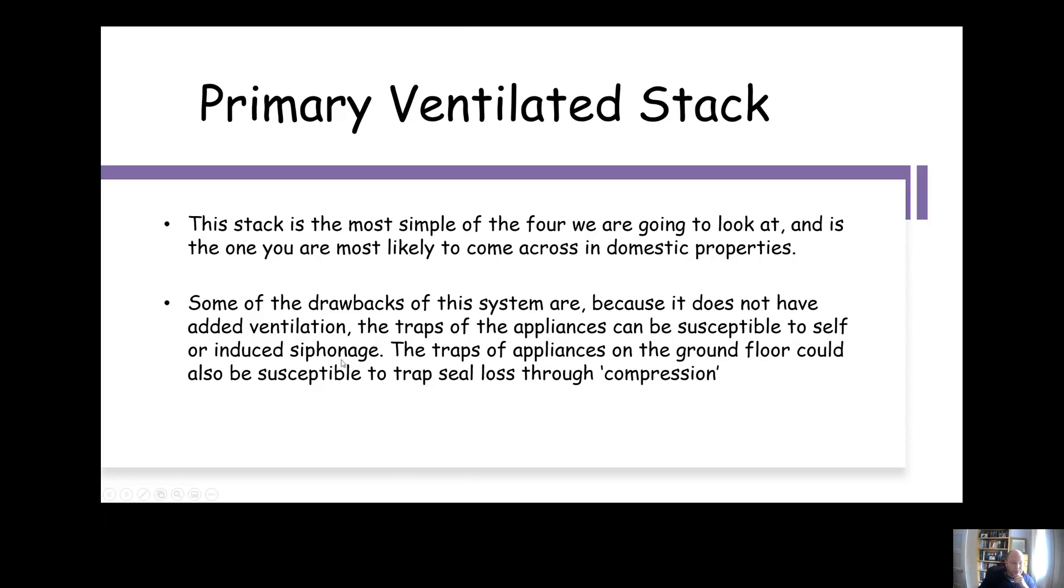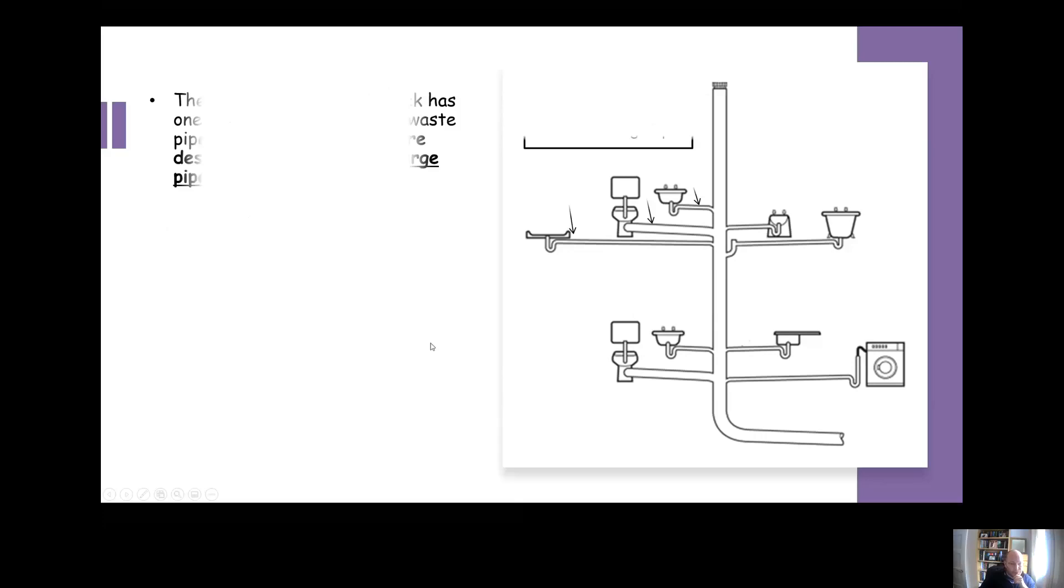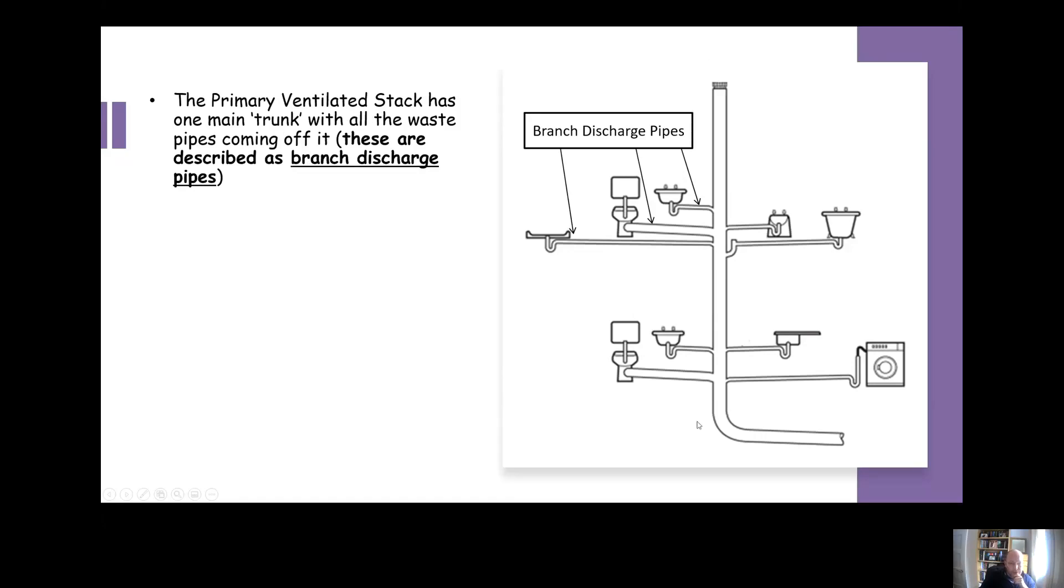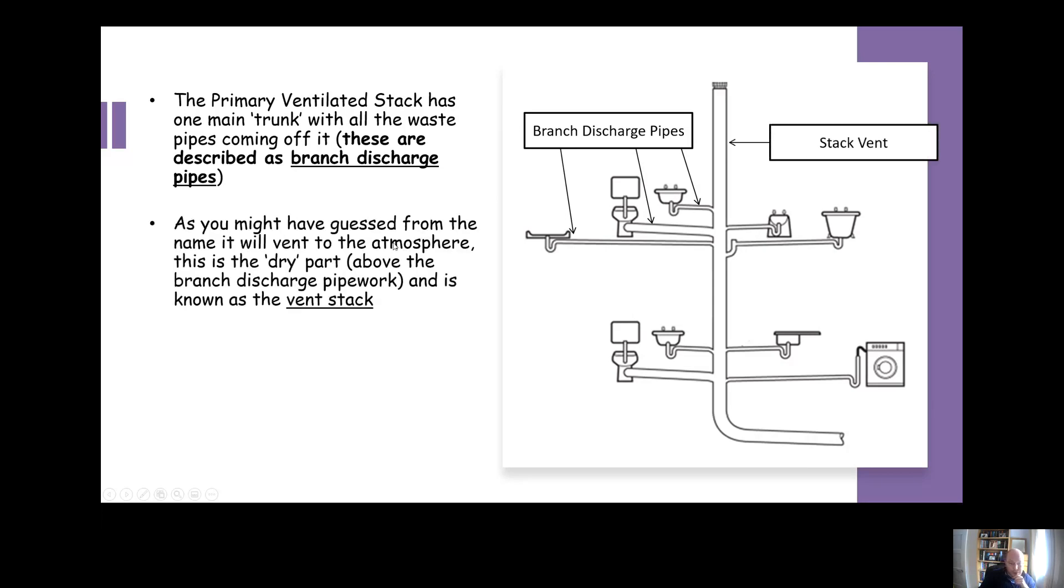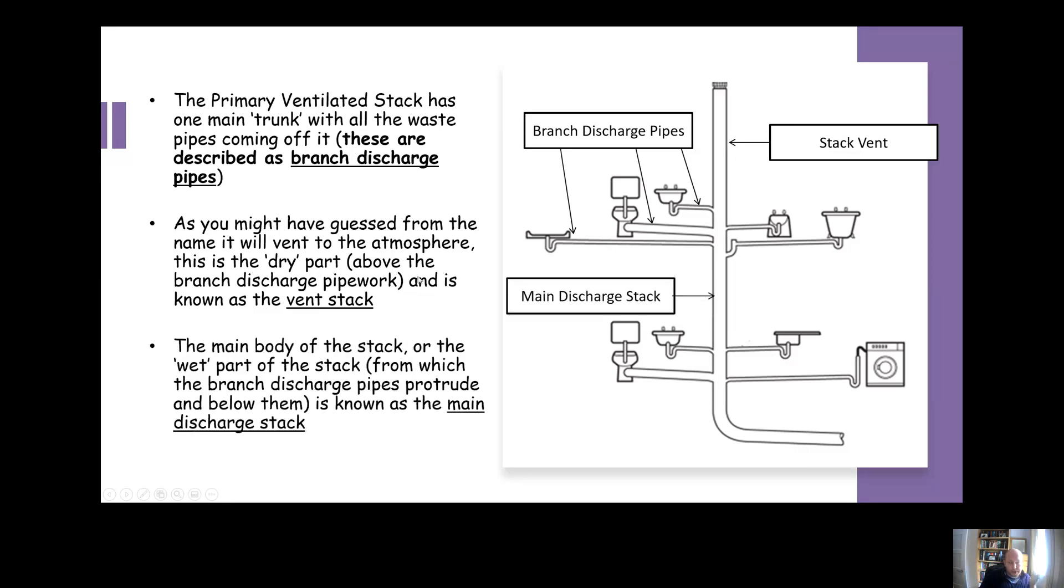Also, the traps and appliances on the ground floor could be susceptible to trap seal loss through compression. This is a primary ventilated stack, and all of the pipes that come off it would be described as branch discharge pipes. The bit, the dry part of the stack, the bit above the highest inlet, would be described as the stack vent or vent stack. And the wet part of the stack that the water flows through would be known as the main discharge stack.